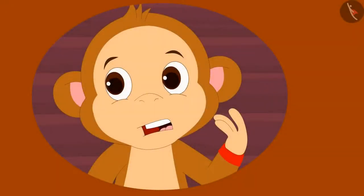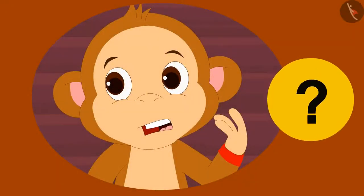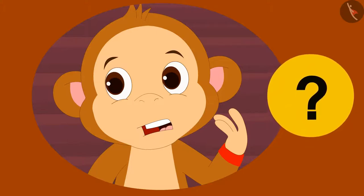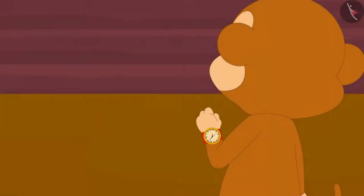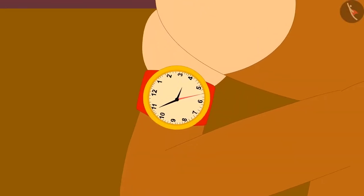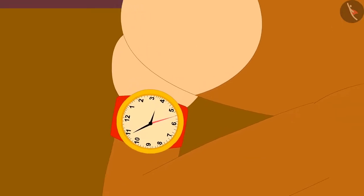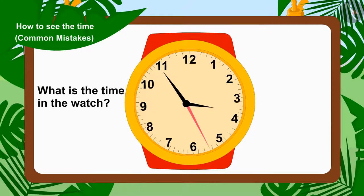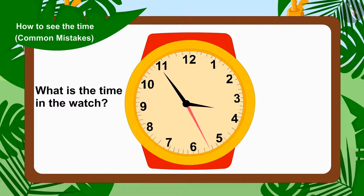But no magic happened and he stayed in his house. But why did it happen? Children, can you tell what mistake Babban has made? When Babban saw the time in the clock, the needles of the watch were like this. Can you tell what time it is in the watch?